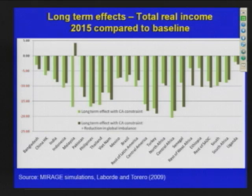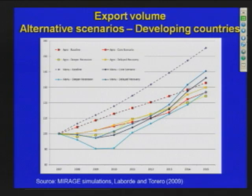For the long-term effects, we have two scenarios: long-term effects with current account constraint, and with current account constraint plus reduction of global imbalances — and we find a similar situation. In the deeper recession and delayed recovery scenarios, the manufacturing default is longer and higher, especially in 2008–2010, before some convergence and growth resume over time.